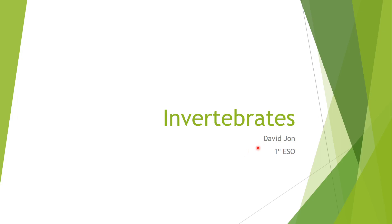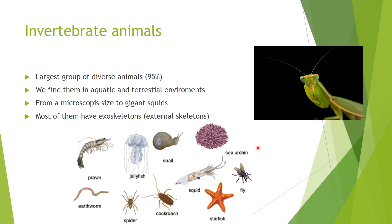We're going to start with the invertebrates. The invertebrates is one of the groups of the animal kingdom. You already know this — there are two main groups: invertebrates and vertebrates. But invertebrates is the largest group in diversity of animals. 95% of the species of animals we know are invertebrates, and we think there are even many more, because there are lots of parts of the earth we still don't know, like the deep ocean.